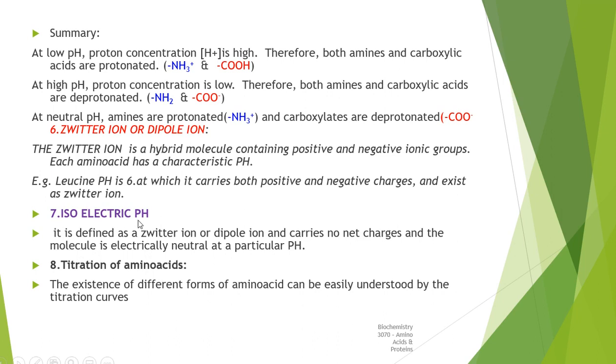Next property is isoelectric pH, which is represented as pI, and this is also specific to each amino acid. Isoelectric pH is the pH at which a zwitterion or dipole ion carries no net charge. That means plus and minus are balanced, and that molecule is electrically neutral.